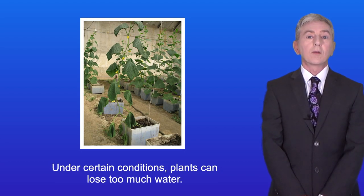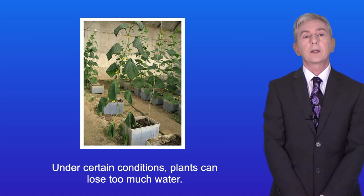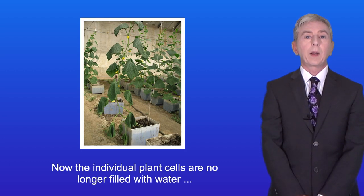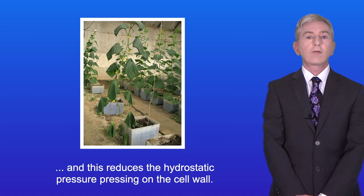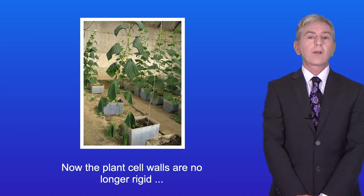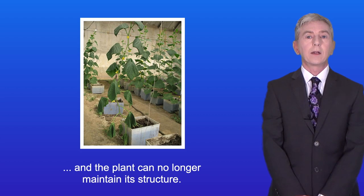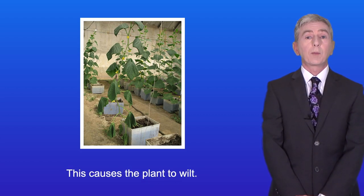Under certain conditions plants can lose too much water. Now the individual plant cells are no longer filled with water and this reduces the hydrostatic pressure pressing on the cell wall. Now the plant cell walls are no longer rigid and the plant can no longer maintain its structure and this causes the plant to wilt.